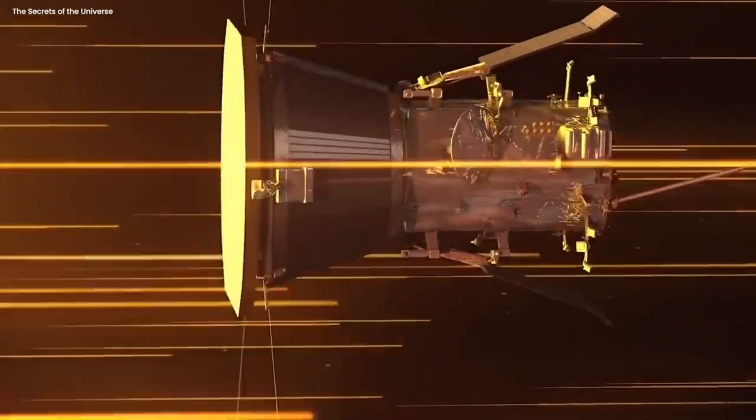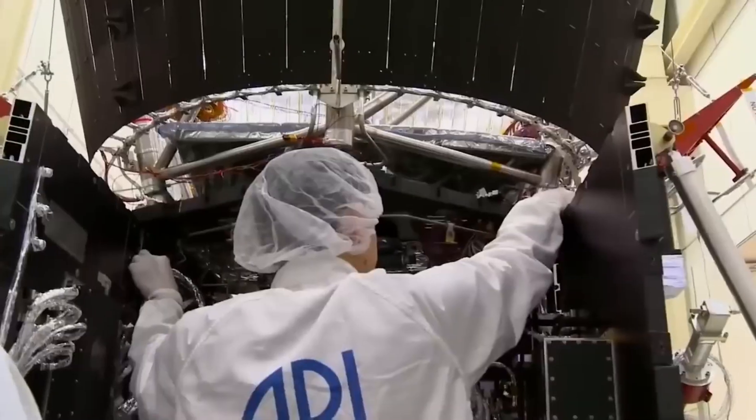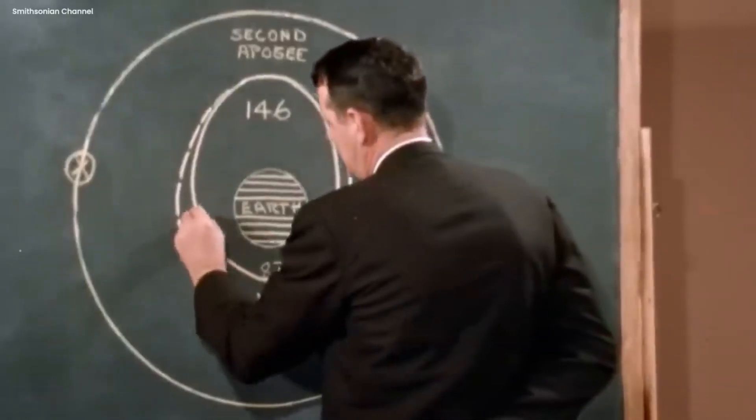Even the fastest man-made spacecraft, the Parker Solar Probe, which was launched in 2018, is only able to reach speeds of up to 430,000 miles per hour, which is a tiny fraction of the speed of light.